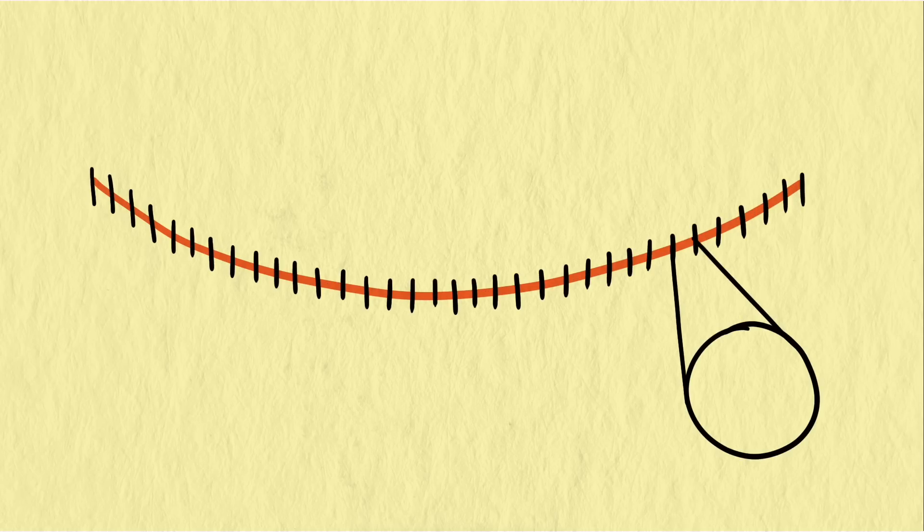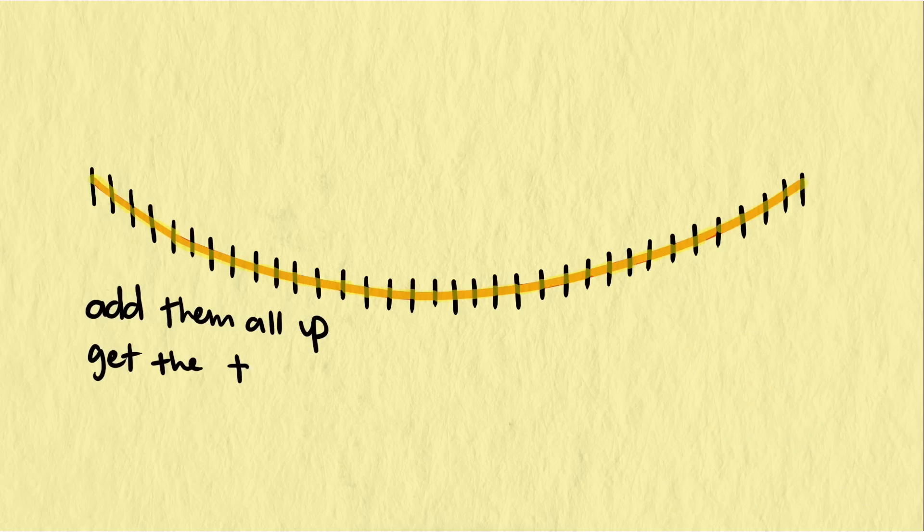First, we can think about approximating the length by thinking of the curve as a chain of small straight line segments. If we chop up the curve into very small pieces, then each piece is approximately a straight line anyway. So we can measure the length of all those small segments and add them up to get an approximate length.